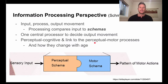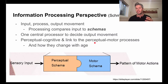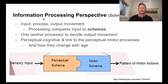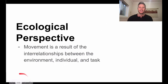There's also a tie between the information processing and maturational perspectives — both tend to say that the development of the central nervous system will in turn dictate how well we can move. But the information processing perspective is more focused on how we perceive the world and think about it. Think of information processing like computer programming.